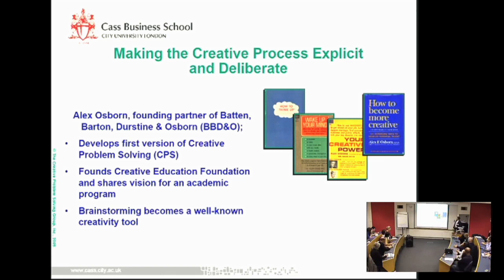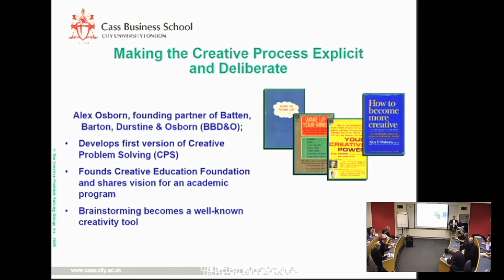That's a lot of what the tradition has been about and what Alex was about. Osborne's goal was to make the creative process explicit, deliberate, and repeatable. Alex was part of BBD&L, an advertising agency — a very big company. The reason he got interested in creative problem solving and eventually brainstorming was because they hired the best and the brightest and the most creative people to do advertising. But something happened when they sat around a table — it was like their creative IQ went to zero. It was the social interaction of creativity that shut it down.